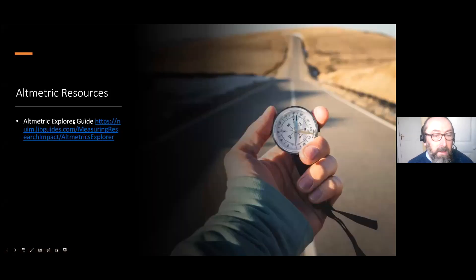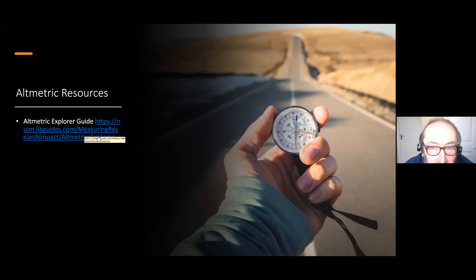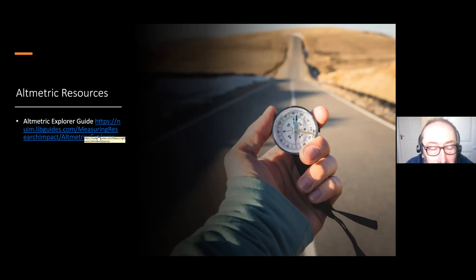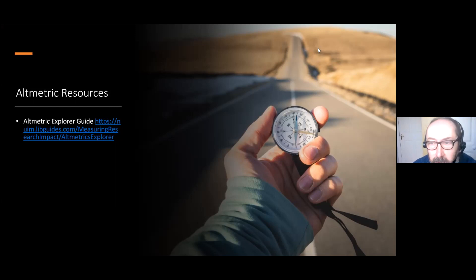I have a guide available: go into the library guides and tutorials, then into Research Support, and there's a guide on Research Impact including an Altmetrics Explorer guide with information on how to set up your account and navigate it at a basic level. If you have any questions at any stage, feel free to contact me. It's a new product and will take a bit of getting used to, but I think it's going to be a very useful and valuable resource.